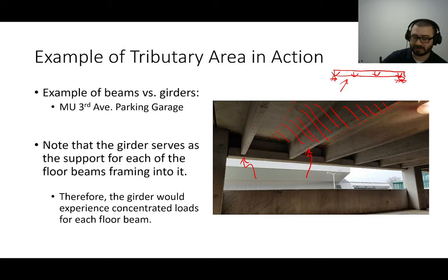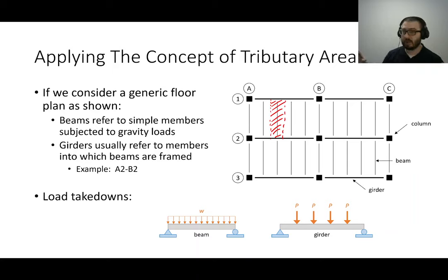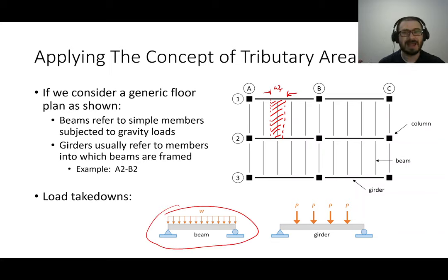That's a model we as engineers are fairly familiar with — we can draw shear diagrams and moment diagrams. If we're looking at the girders, say A2B2, it's responsible for a larger area because we go halfway to the next girder on both sides — so those girders tend to be larger. That's actually what you can see in the parking garage photo: the girder just looks bigger than the beams framing into it because it's responsible for more area.